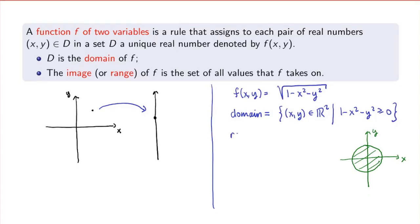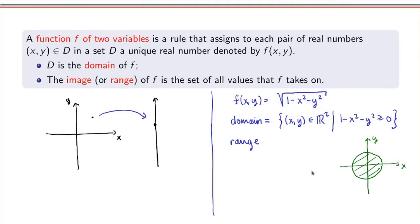As for the range of the function, the range is all the values that can be obtained by applying f to pairs of real numbers in the domain. Because the argument is always between zero and one, the square root of any number between zero and one is also between zero and one. So the range is the interval from zero to one.